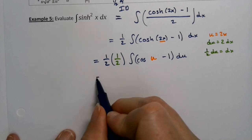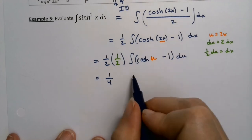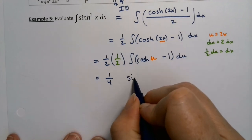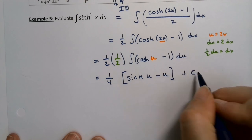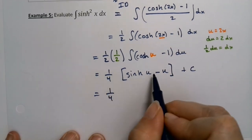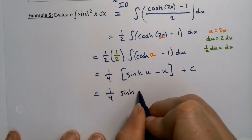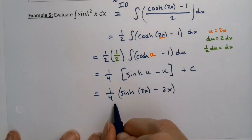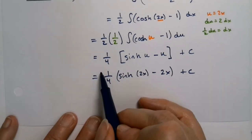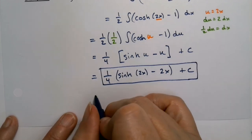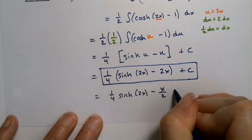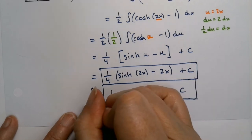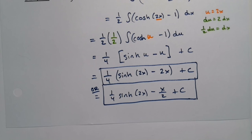Integrating with respect to u: the integral of cosh is sinh, so this is (1/4)[sinh(u) − u] + C. Then back-substitute: this is (1/4)[sinh(2x) − 2x] + C. If you want to distribute the one-fourth, that's fine too — it would be (1/4)sinh(2x) − x/2.